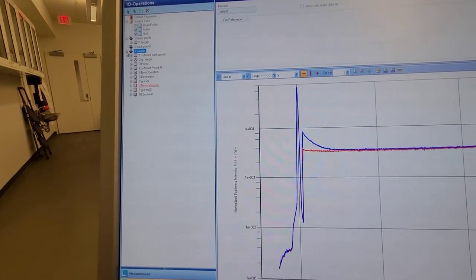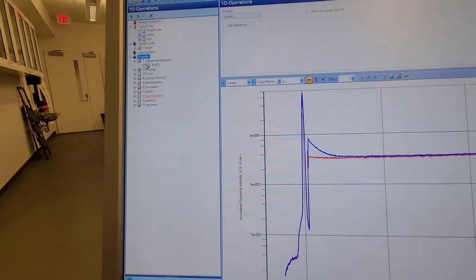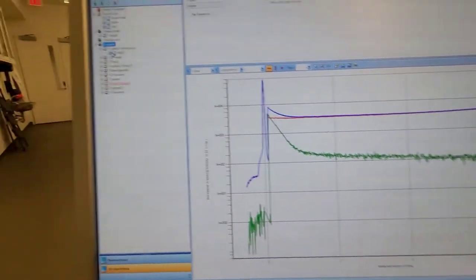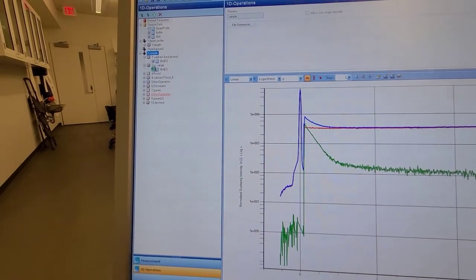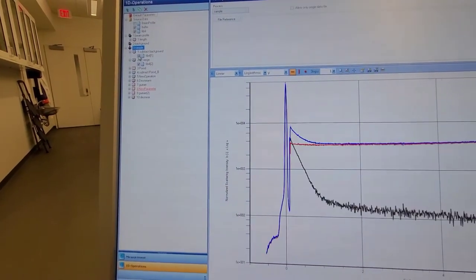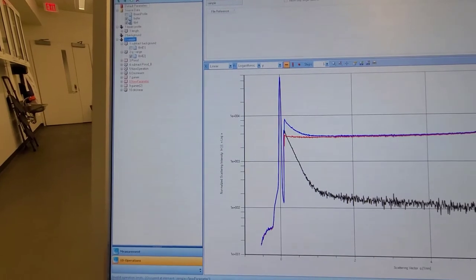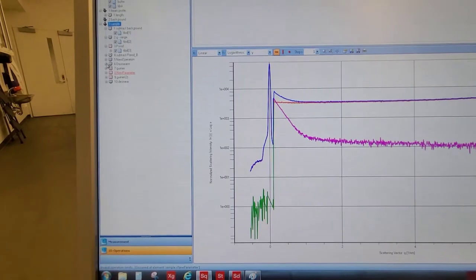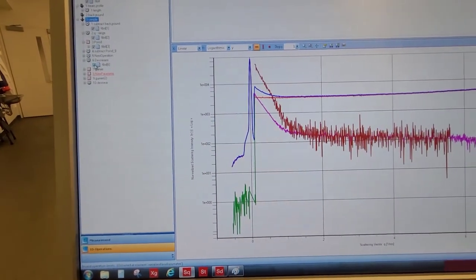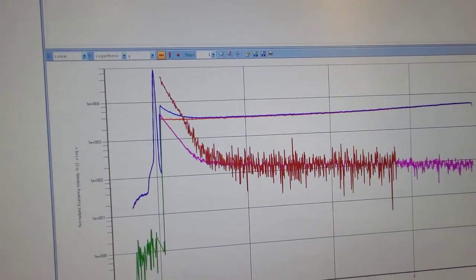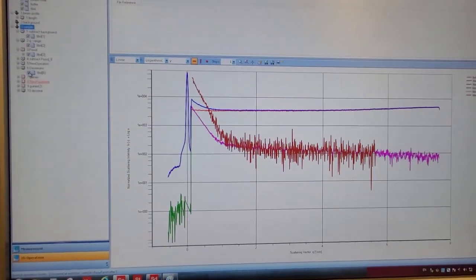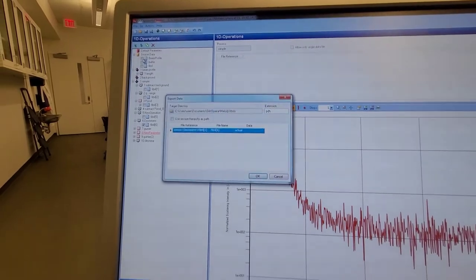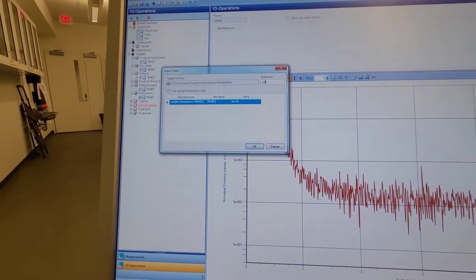Once you do that, when you do the subtraction, it also calculates it for you. So it subtracts the buffer from the sample. The black line, the black profile that you see is the subtraction. You can also do a probe subtraction. That should be in there and de-smeared, which is crucial for line collimation. This red spectra is the de-smeared one.